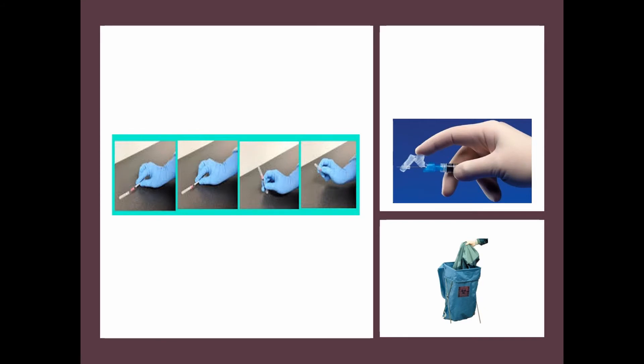Your organization may have other work practice controls to reduce the risk of exposure by altering the way in which a task is performed to make it safer. Work practice controls may also include policies such as no eating, drinking, applying cosmetics, or handling contact lenses in areas where exposure to blood may occur. Examples include one-handed needle re-scooping, one-handed sheathing of needles, and the proper protection of contaminated laundry through color-coded or labeled containers.